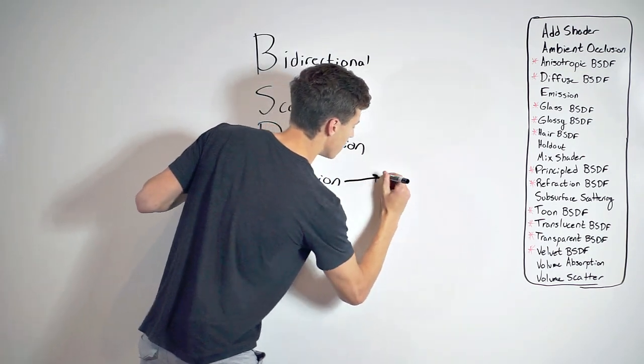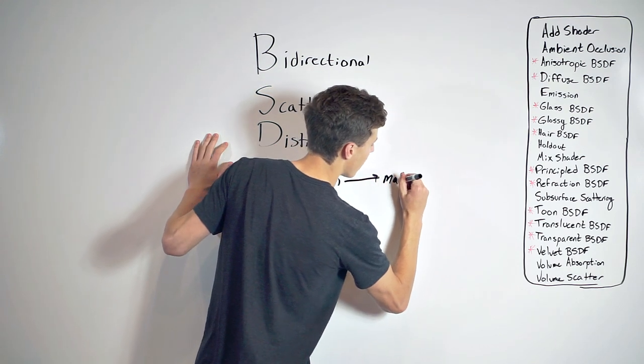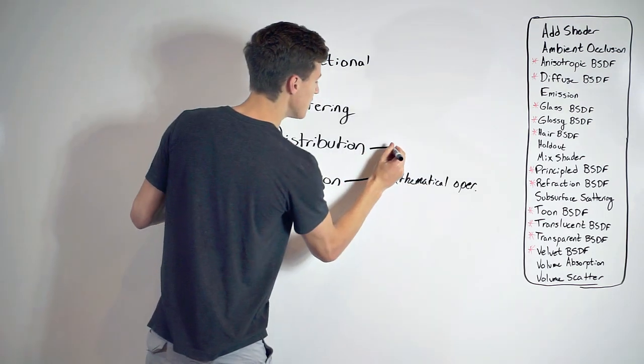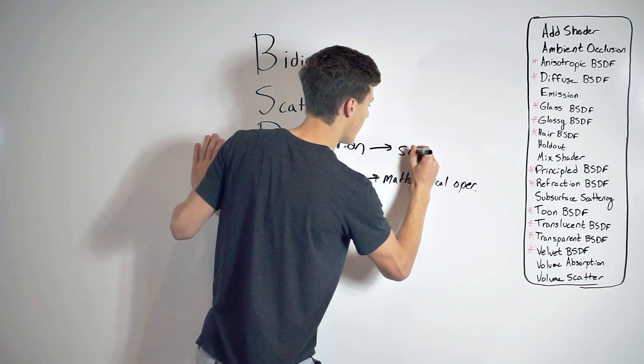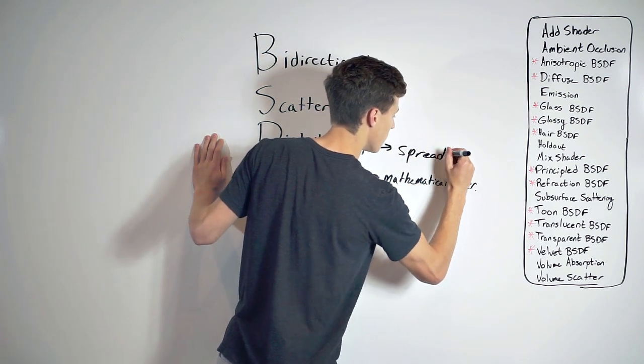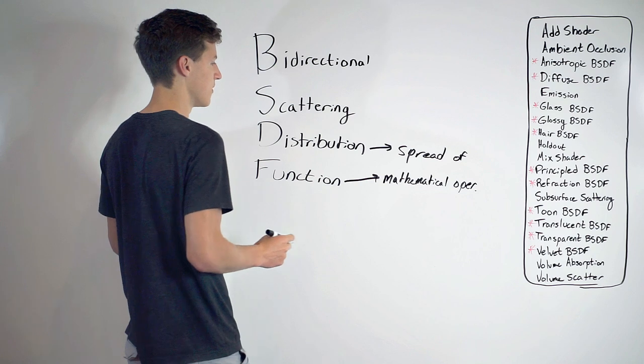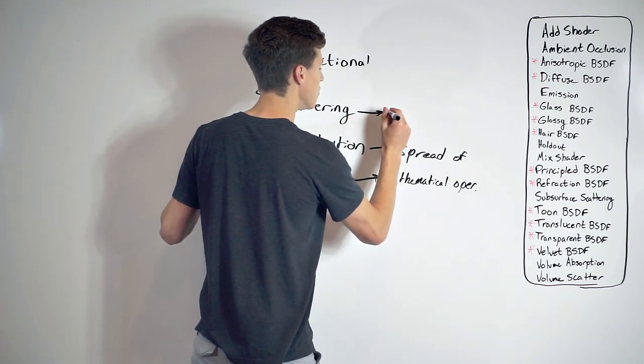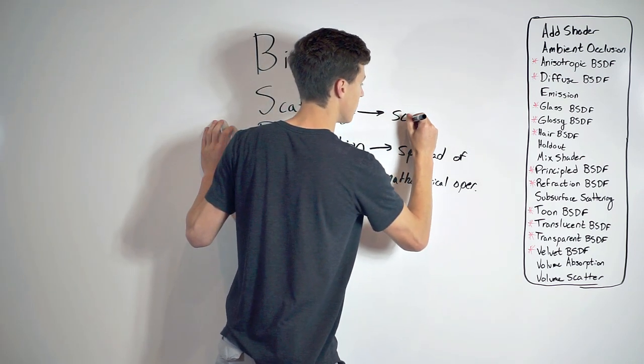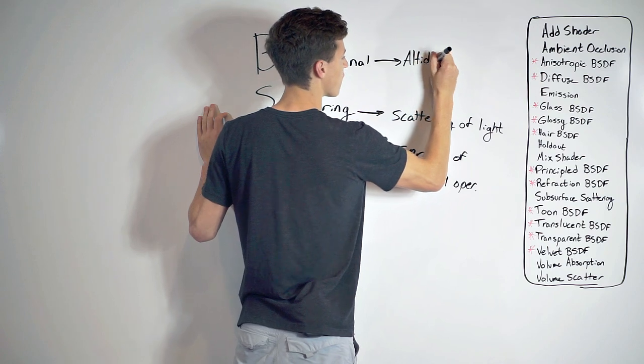First off, let's start with the word function. Function is a mathematical operation. Distribution refers to the spread or shape of, we'll just write spread of because that's really all we need to worry about. So scattering refers to the scattering of light. And bi-directional refers to the two...